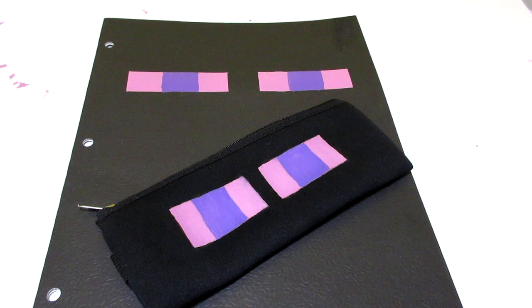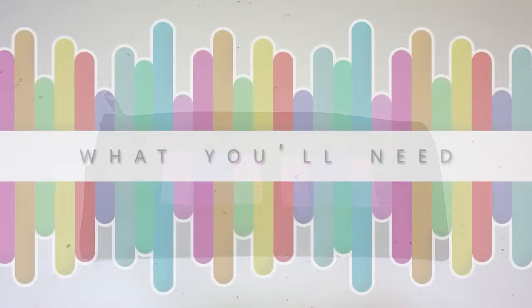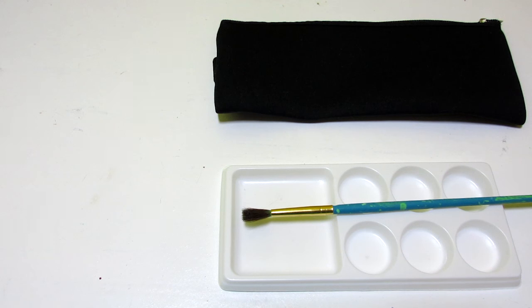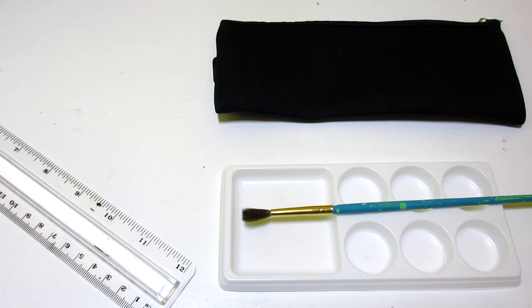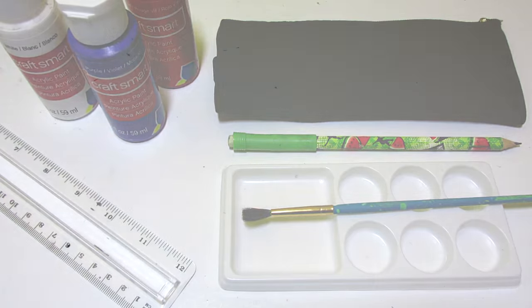Now we're going to move on to our Enderman. First, we're going to make an Enderman pencil pouch. So here's what you'll need: a black pencil pouch, a brush with a mixing tray, a ruler, some red, white, and purple paint, and a pencil. So let's begin.